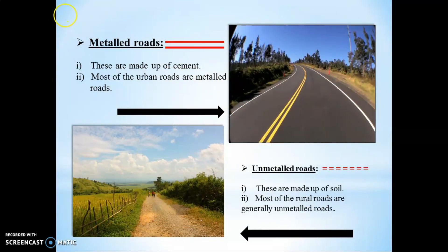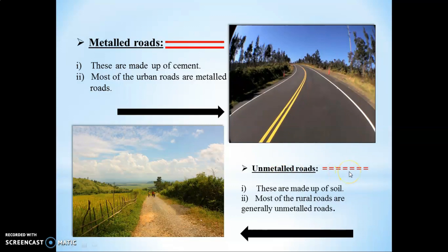Metal roads are shown by two red lines running parallel — this denotes pucca roads. Their presence indicates the development of trade in the region. These roads are made of cement, and most urban roads are metal roads. For unmetalled roads, the symbol is two parallel broken lines. These are made of soil, and most rural roads are generally unmetalled roads.